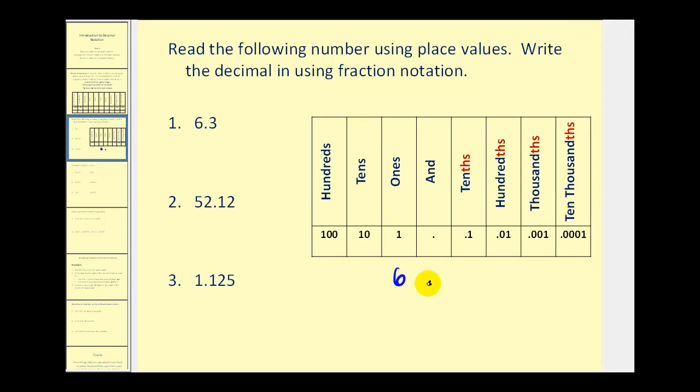So for 6.3, we would read this 6 and, for the decimal point, 3 tenths. So 6.3 equals 6 and 3 tenths. This is a mixed number. If we wanted to write this as a fraction, we could convert this to an improper fraction. 10 times 6 plus 3 would be 63 tenths.